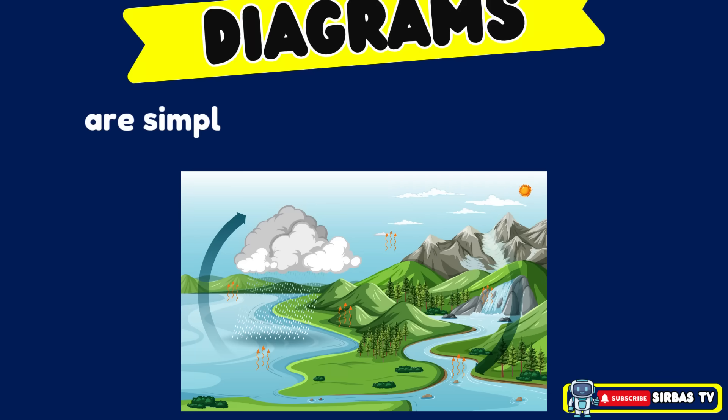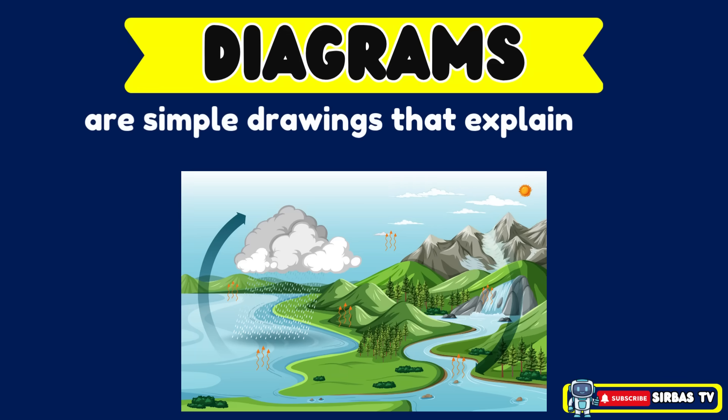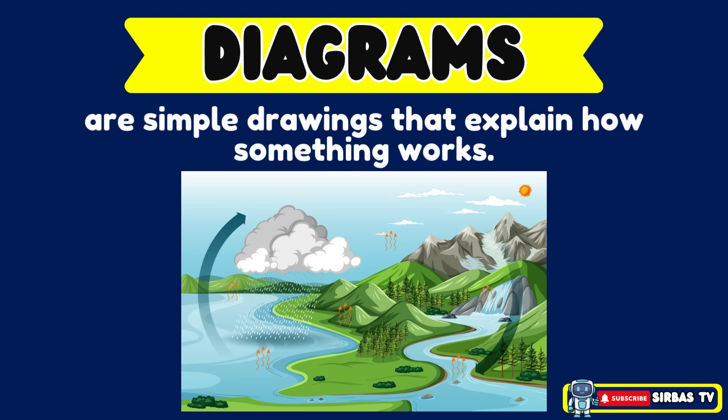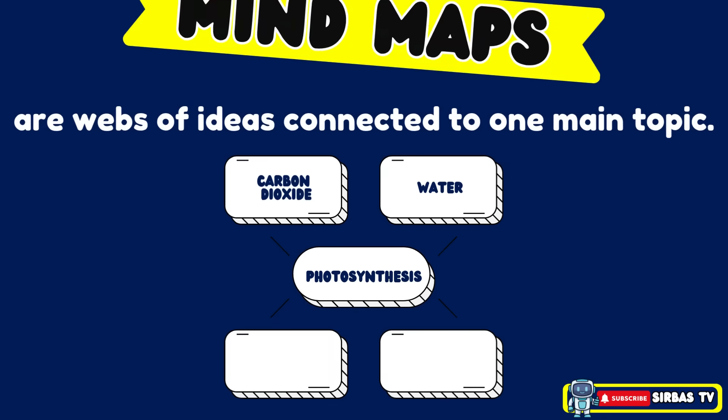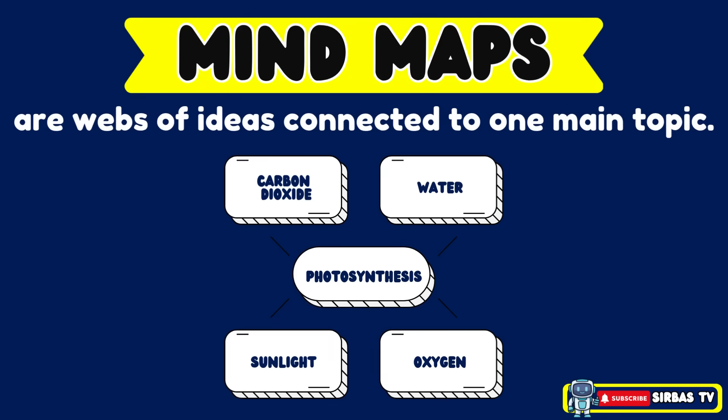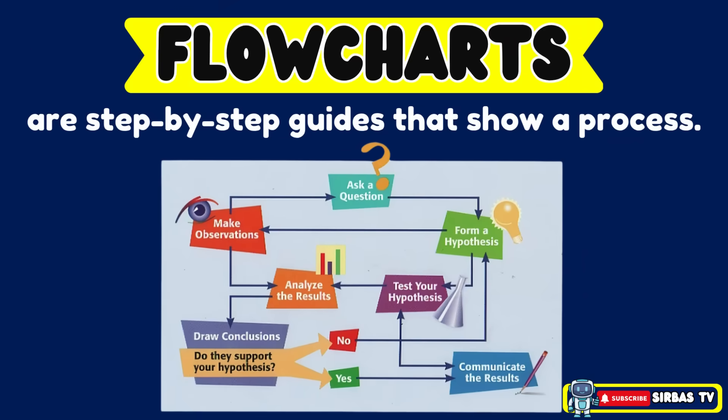Diagrams are simple drawings that explain how something works — for example, a water cycle diagram showing evaporation, condensation, and precipitation. Mind maps are webs of ideas connected to one main topic — for example, a mind map with photosynthesis in the middle and branches like sunlight, carbon dioxide, and oxygen. Flowcharts are step-by-step guides that show a process — for example, a flowchart showing the steps of the scientific method.